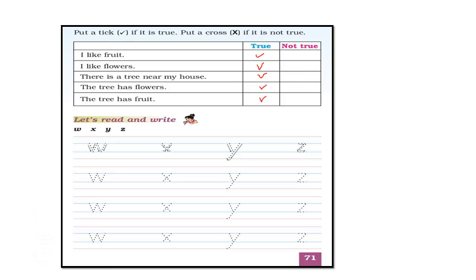Right. And the next sentence is 'The tree has flowers.' Most probably trees have flowers, so I can put a tick mark here also. Right. And the last sentence is 'The tree has fruit.' Perhaps all trees have fruits, so we can put a tick mark here also.